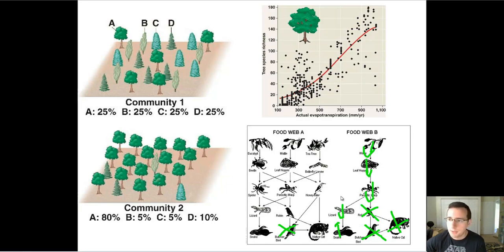So extinctions, invasive species, all of these kinds of disturbances, things that affect the amount of nutrients,